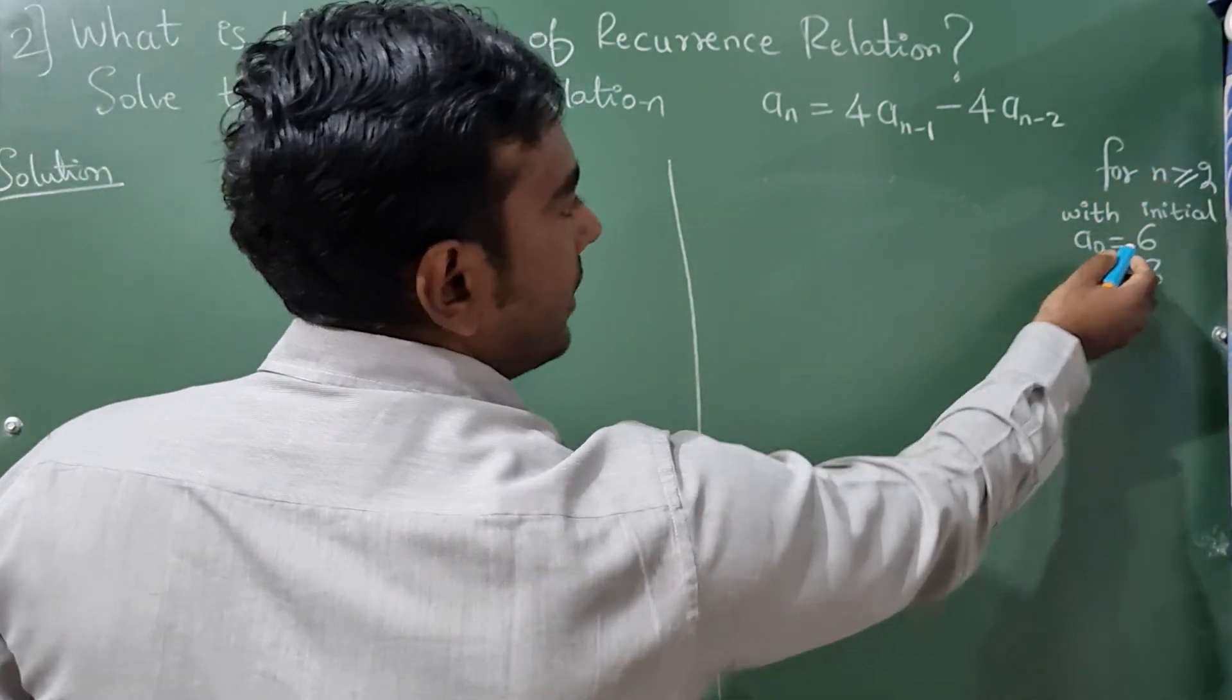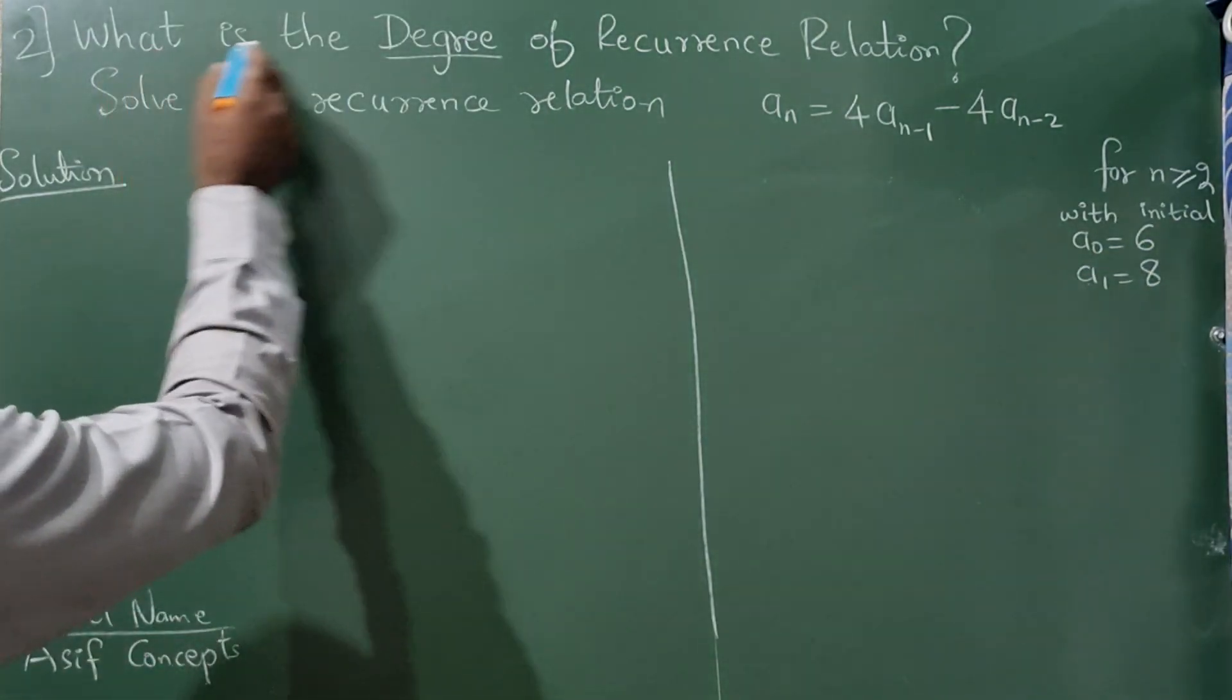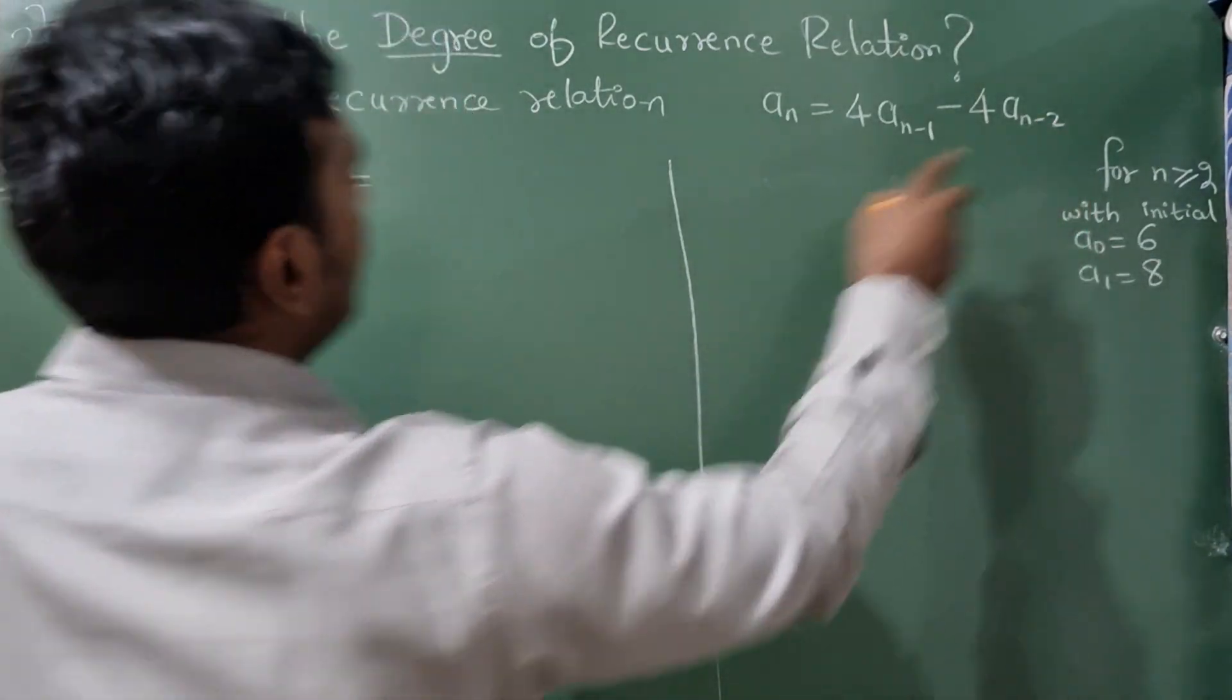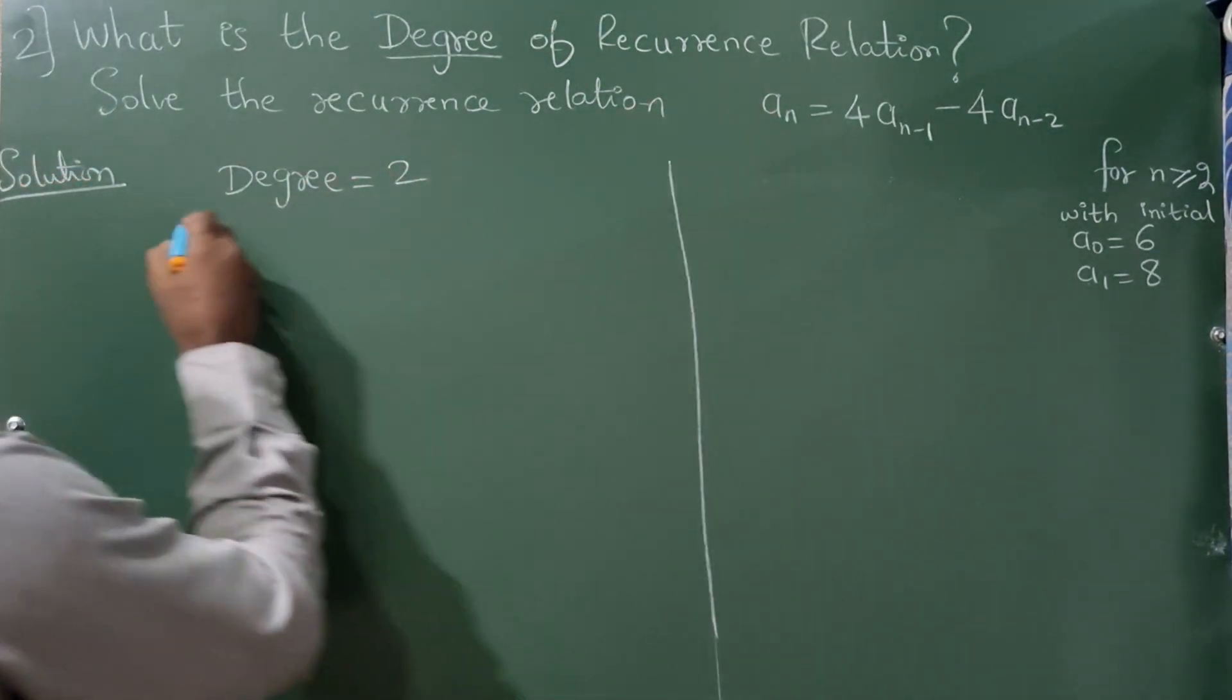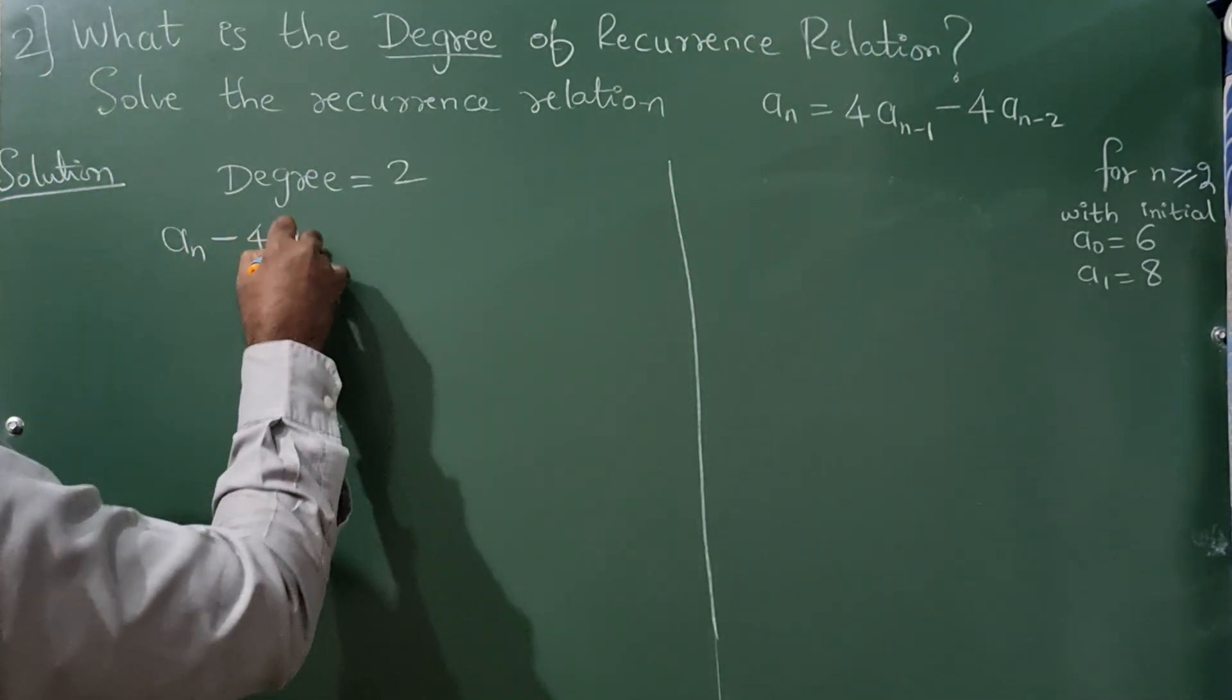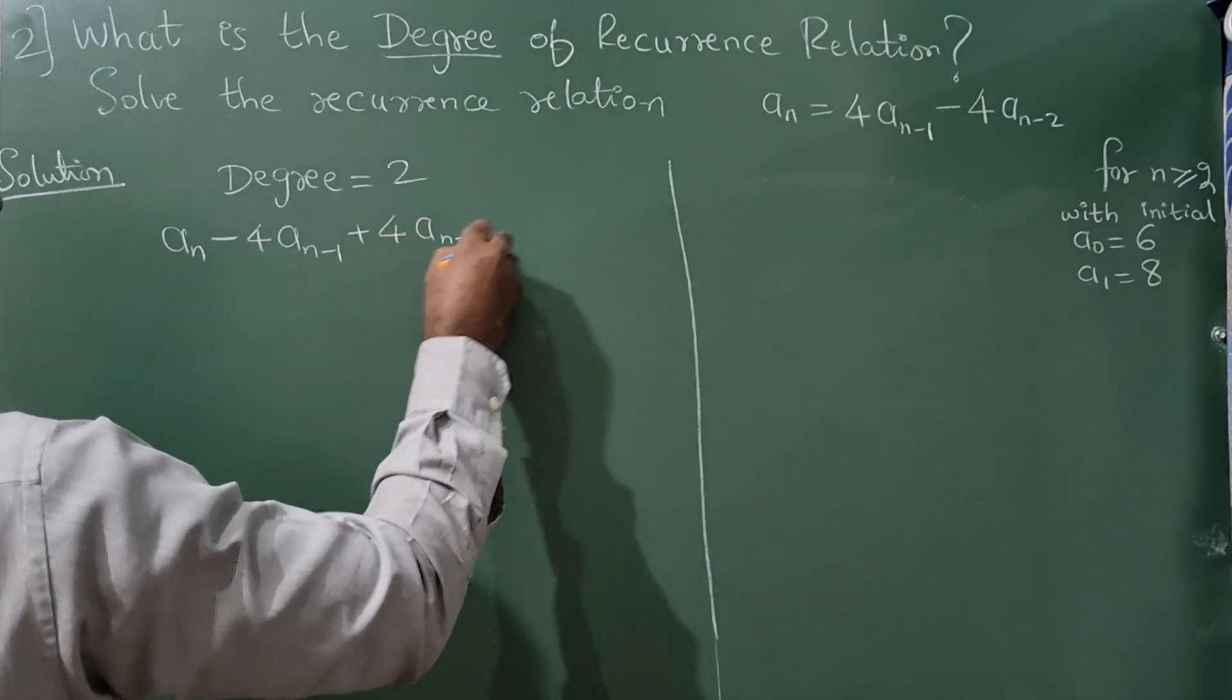Now first let us write degree. Degree depends on this n-2, it means degree is 2. Now write this aₙ, take all the terms on the left hand side so it will become aₙ - 4aₙ₋₁ + 4aₙ₋₂ = 0.